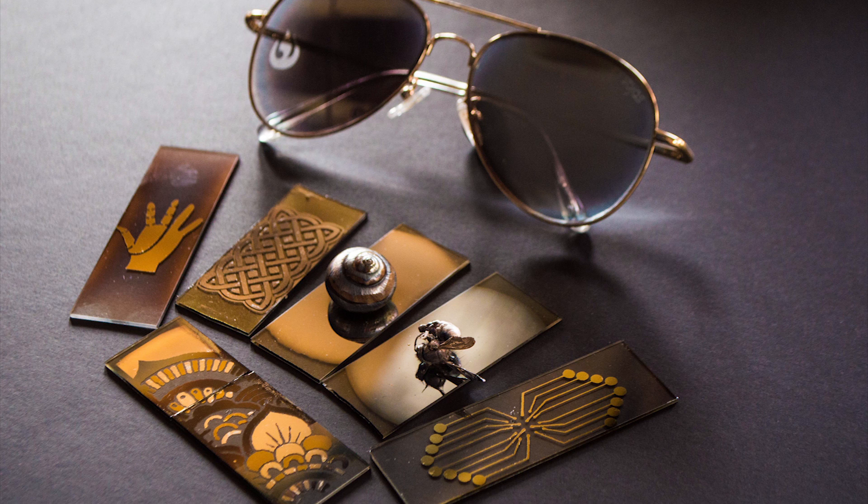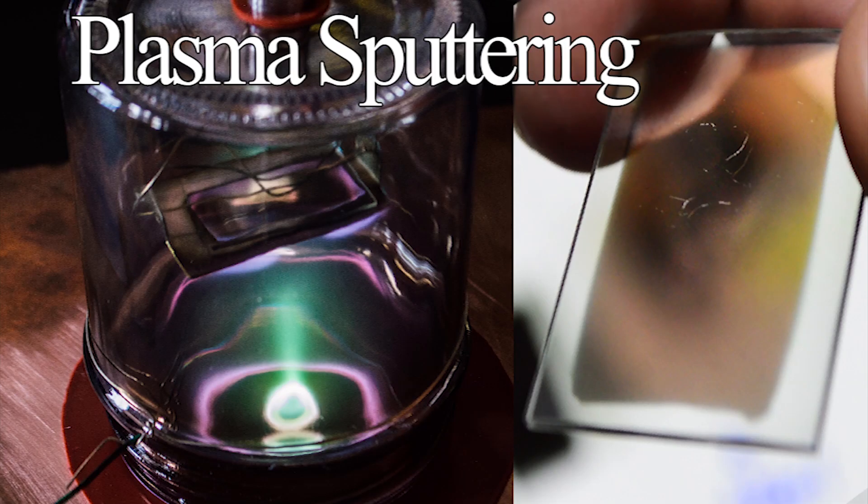Even though the plasma itself can get very hot, it's fairly straightforward to keep samples cool during the process so that this isn't an issue. As such, it really can coat just about any solid material, be it plastic, metal, glass, or otherwise. If you haven't seen it yet, I would highly recommend giving the last video a watch if you want to learn exactly how the system works.